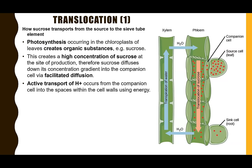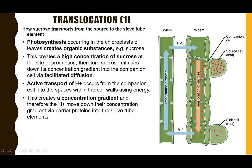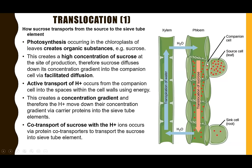At the same time, there is active transport of hydrogen ions from the companion cell into the cell wall space — shown here in the light green section — creating a high concentration gradient of hydrogen ions or protons within the cell wall. This is important because sucrose is transported from the companion cell into the sieve tube elements of the phloem by co-transport, and it must be co-transported with those hydrogen ions.